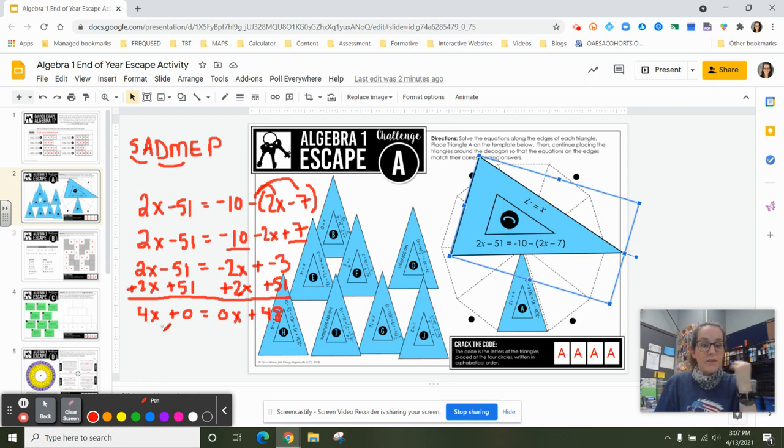Obviously 4x plus 0 is 4x. 0 times x is 0 plus 48 is going to give us 48. Divide both sides of my equal sign by 4. The opposite of multiplication is division. What is 48 divided by 4? So I end up with x equals 12.